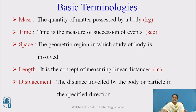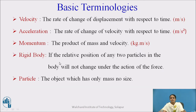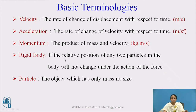Linear distances means the distance in a straight line. Displacement is the distance traveled by a body or particle in a specified direction. Velocity is the rate of change of displacement with respect to time; the SI unit is meter per second. Acceleration is the rate of change of velocity with respect to time; the SI unit is meter per second squared. Momentum is the product of mass and velocity; the SI unit is kg meter per second.